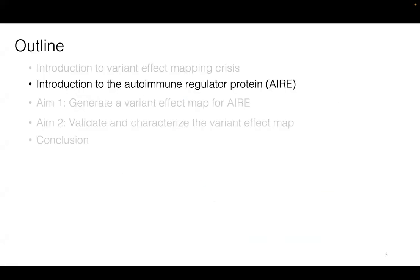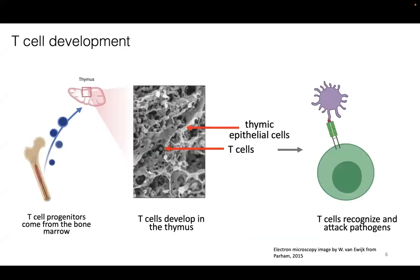I am focusing on one gene called the autoimmune regulator, AIRE. As a brief introduction, it's involved in T-cell development. T-cell progenitors come from the bone marrow and travel to the thymus, which is an immune organ located between our lungs.